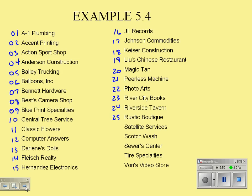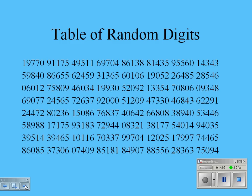It doesn't matter what order the list is in to begin with. Once I've numbered them from one to 30, I'll employ a random method of picking which five to use. One such method is a table of random digits—there's one in the back of your textbook called Table B.